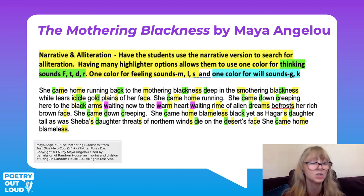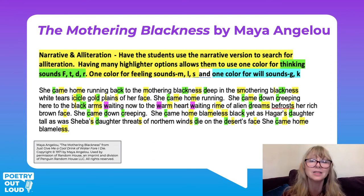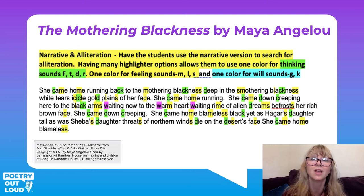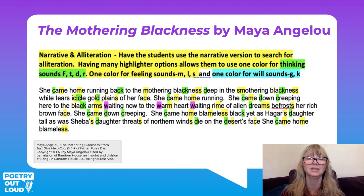There's so much in 'she came home running, running — she came back to the mothering blackness — that deep in the smothering blackness, white tears, icicle, gold planes of her face — she came home running.' Students can explore the onomatopoeia of the running and the waiting, but also the sense of home — what is home, and how does that change throughout the poem? Because 'home' is onomatopoetic in that poem. Each instance of 'home' is different from the other — how do they feel that? These two poems are wonderful examples of exploring all these devices.